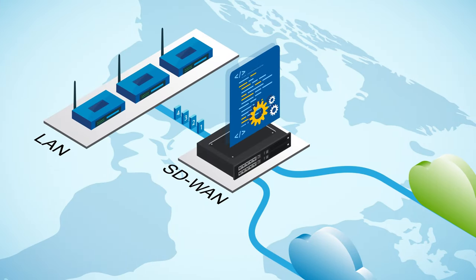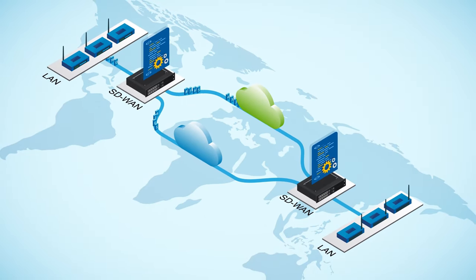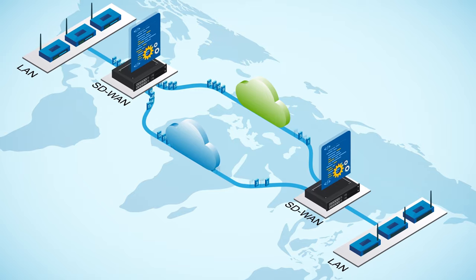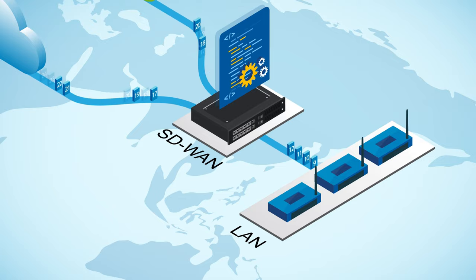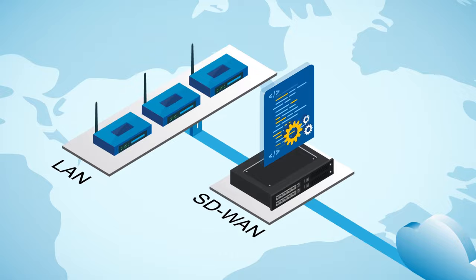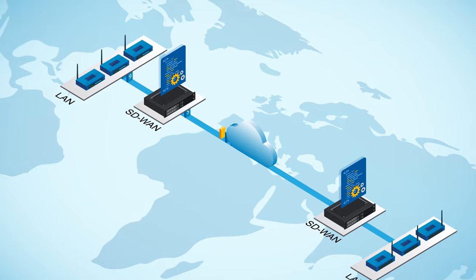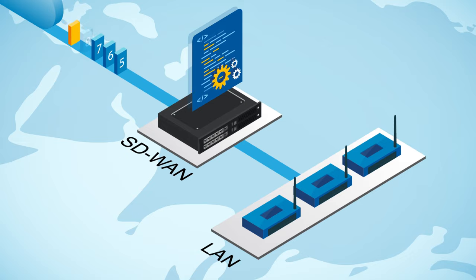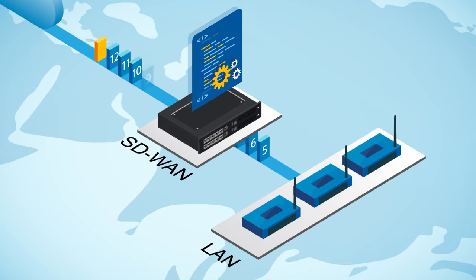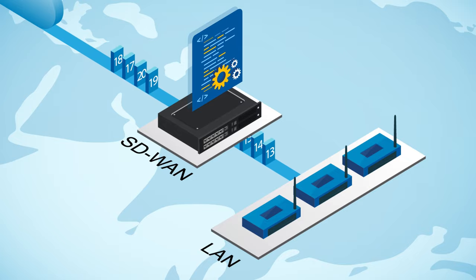For instance, an SD-WAN peer, when sending highly critical data, might duplicate each packet and send copies over two transport networks simultaneously to protect against possible packet loss. The receiving peer then discards any duplicates and delivers a single copy of each packet to its LAN. Alternatively, a sending peer might employ forward error correction, including additional information along with the data that allows the receiving peer to regenerate any packets lost in transmission. And by adding sequence numbers, packets arriving out of order can be reordered before delivery to the LAN.